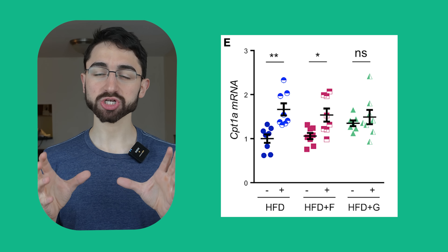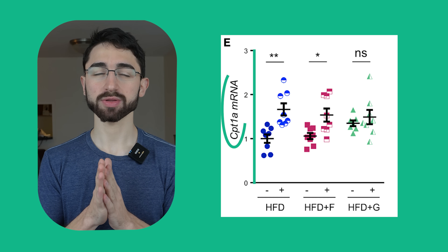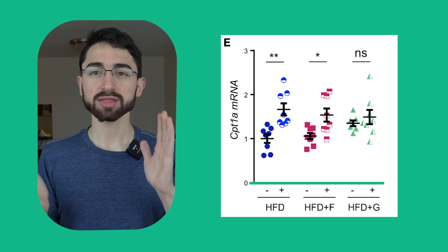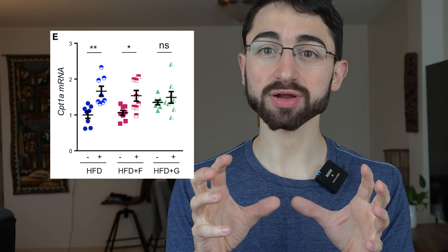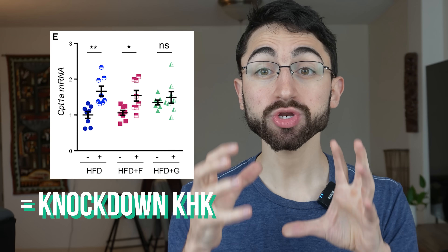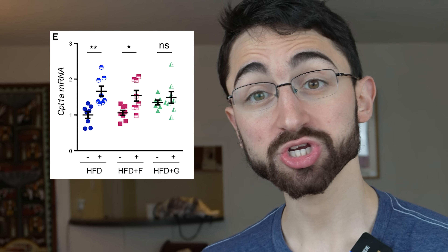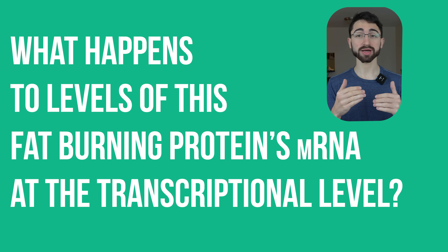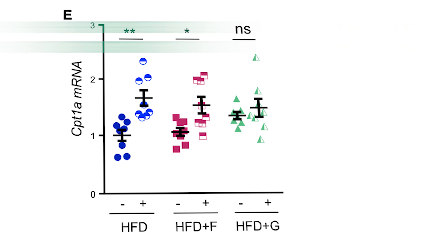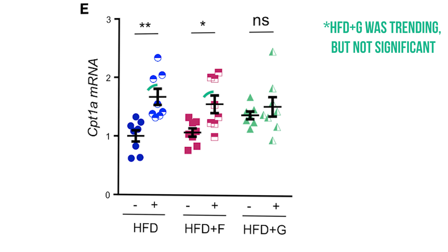What you're looking at in this figure is expression levels. On the y-axis you have CPT1A mRNA levels — higher is better. On the x-axis, the minus means without a siRNA and the plus means with a siRNA. siRNA is a technique for knocking down a protein. What are they knocking down? Ketohexokinase. So basically, what you're seeing is CPT1A levels on the different diets, and then what happens when you knock down ketohexokinase, which blocks fructose metabolism. The question they're asking is: what happens to levels of this fat-burning protein at the transcriptional level when you knock out ketohexokinase? And what you see is that across all groups, there's an increase in CPT1A levels when you knock out ketohexokinase. This is really saying that fructose metabolism is important in regulating the rate-limiting enzyme in fat burning, and that when you decrease fructose metabolism, there's an increase in this protein that facilitates fat burning.